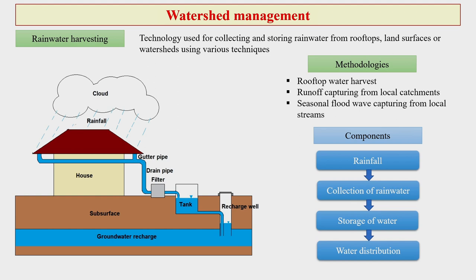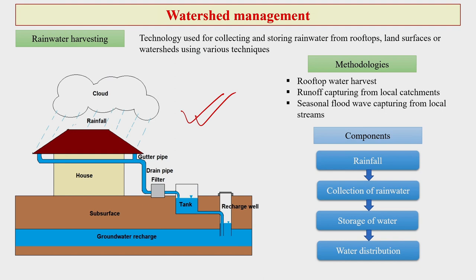Rainwater harvesting and rooftop water harvesting have become one of the ways that people can actually harvest rainwater. Whenever rain comes, we can collect and harvest it in various manners. We can recharge our wells and recharge groundwater. Rooftop water harvesting has become a norm in some parts of the world and in our country, where building a house or flat requires it. Runoff capturing for the local catchment area is another aspect where we are lagging behind many other countries, and we need suitable technologies to capture runoff loss.